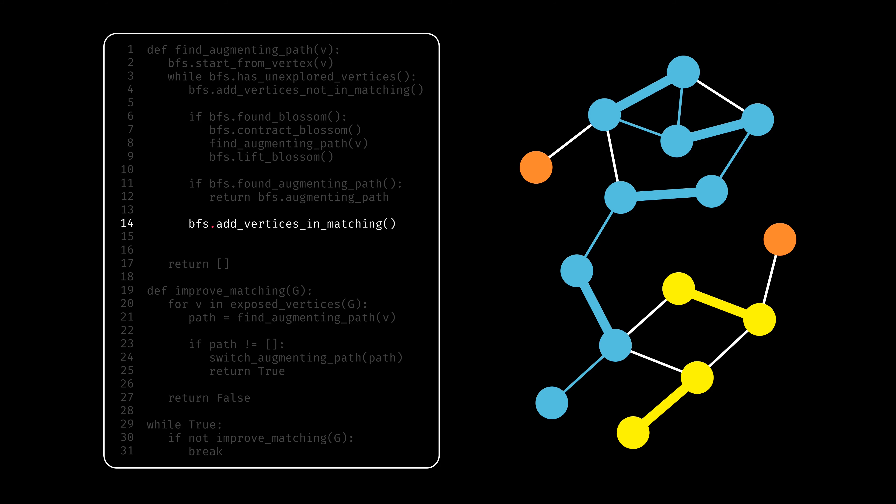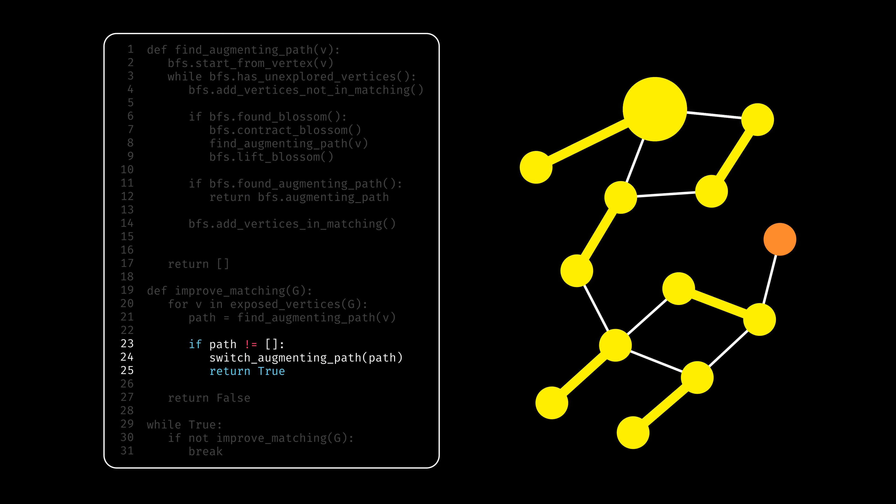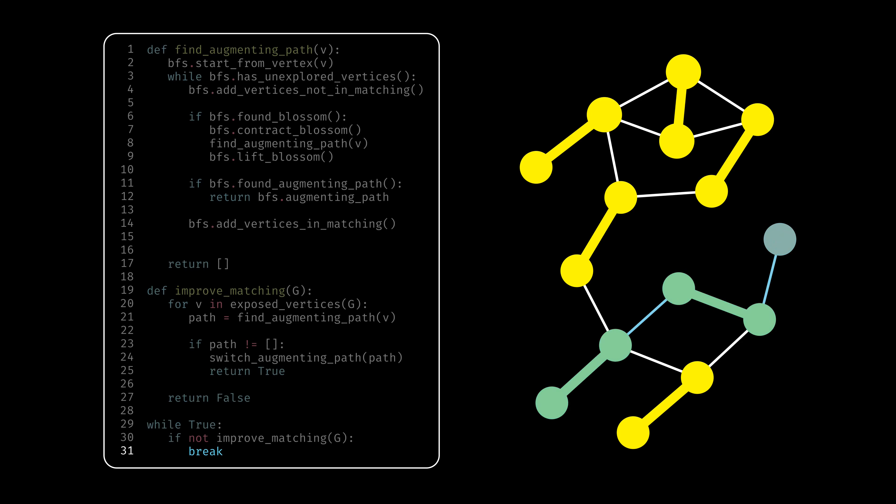Once it finds the blossom, it contracts it, runs the algorithm again on the smaller graph, finds the augmenting path, improves the matching, and then lifts back. After this, it terminates, since there are no more augmenting paths.